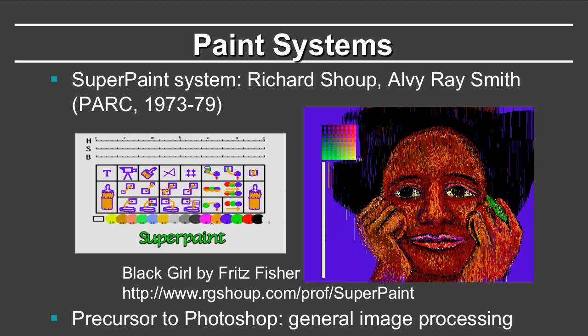Following that, there was also a lot of interest in the development of paint systems. The SuperPaint system, developed by Richard Shoup and Alvy Ray Smith, again at Xerox's Palo Alto Research Center in the 1970s, really presages modern software technologies like Adobe Photoshop. In fact, Adobe was one of the early startups in computer graphics, and nowadays we don't think twice about applying general manipulations to images.